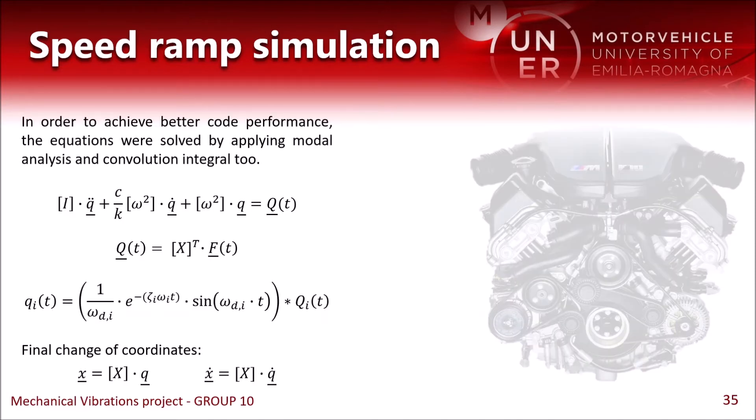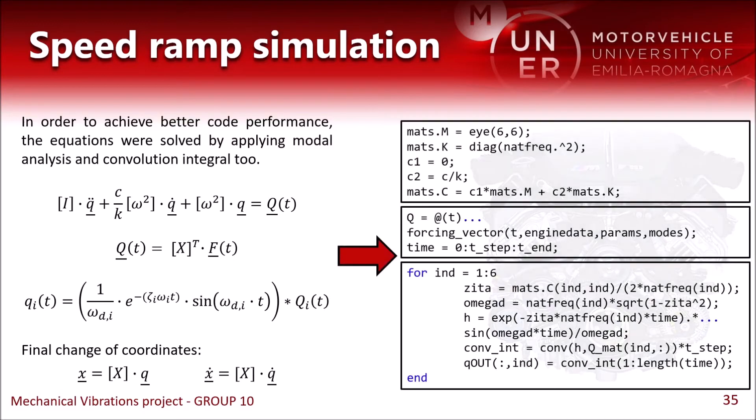This is our second approach to solve the same problem, the speed ramp simulation. Here we use modal analysis and we apply the convolution integral with a response to the unitary impulse and with a new forcing vector, which is the forcing as projected into a modal space. Then we have a final change of coordinates to obtain the actual time domain solution.